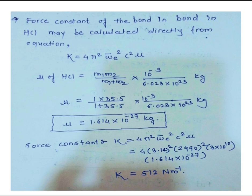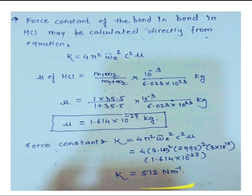Substituting all values into the force constant equation: k = 4 × (3.14)² × (2990)² × (3×10¹⁰)² × 1.614×10⁻²⁷. After calculating, we get k = 512 N/m. The unit of the force constant is newton per meter. By this method you can calculate ω̄e, xe, and the force constant k.